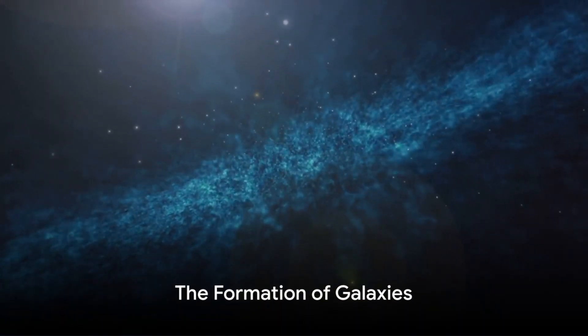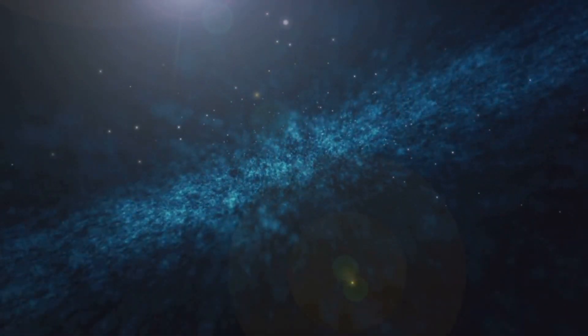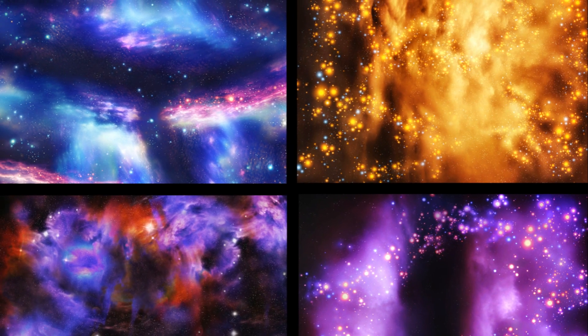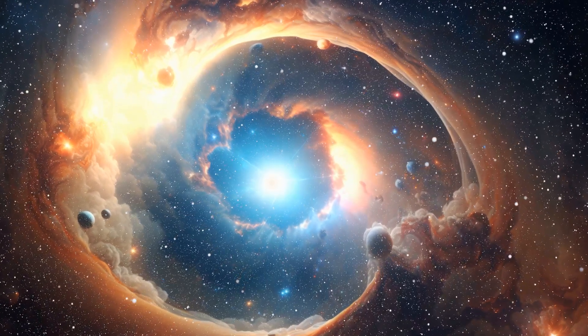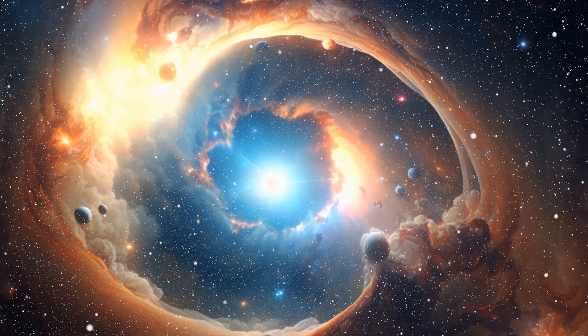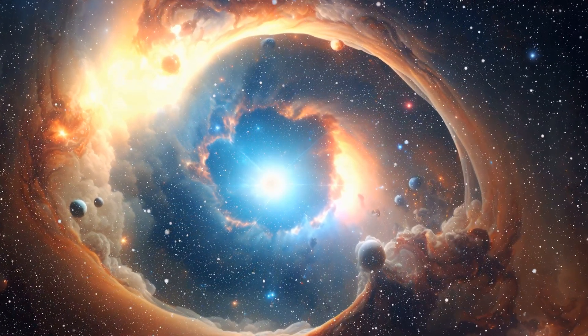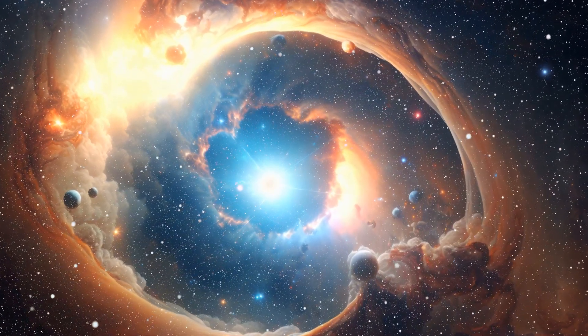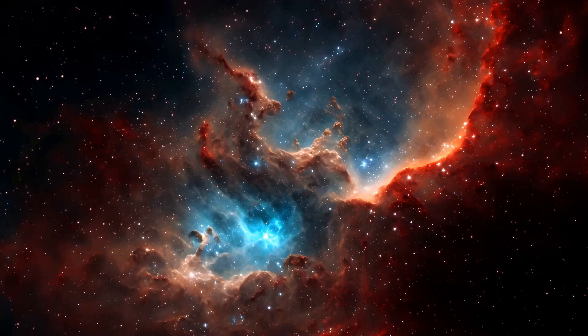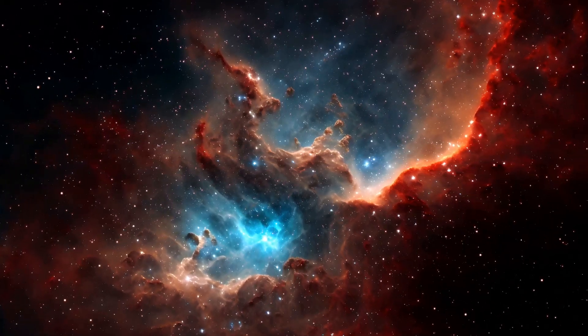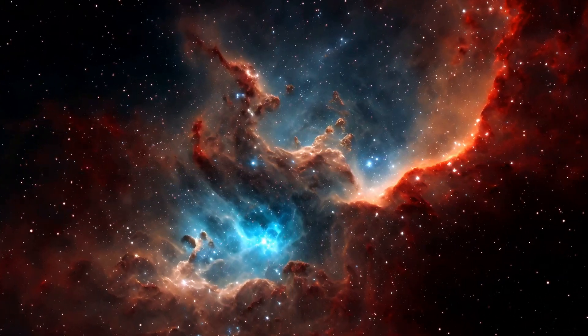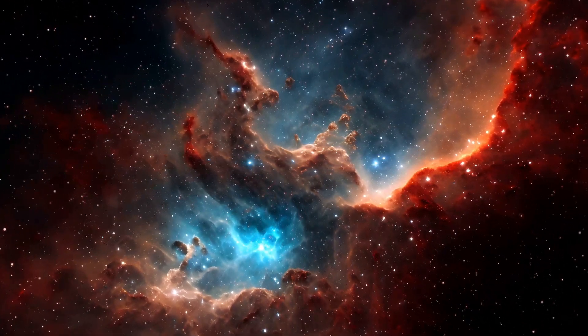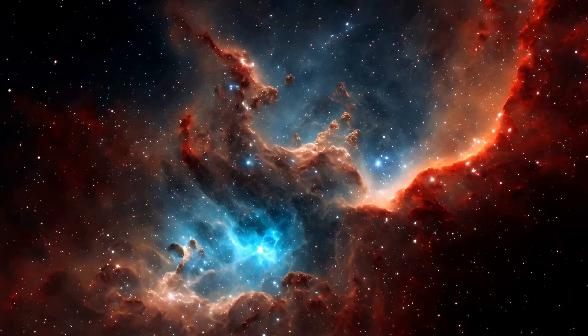Fast forward a few billion years and the universe is filled with galaxies, each one a cosmic city of stars. Now imagine the universe as a gigantic cosmic soup. In the beginning it was filled with particles of hydrogen and helium scattered across the vast expanse of space. Gravity, the great sculptor of the universe, began to pull these particles together. They started to clump, forming denser regions. Over time, these regions started to spin and collapse under their own gravity, creating swirling disks.